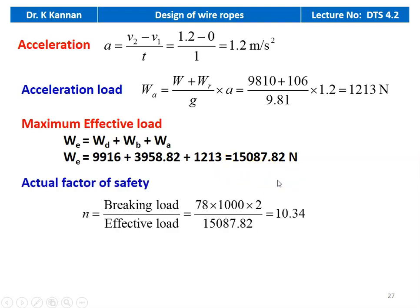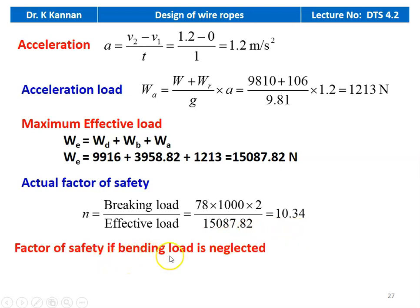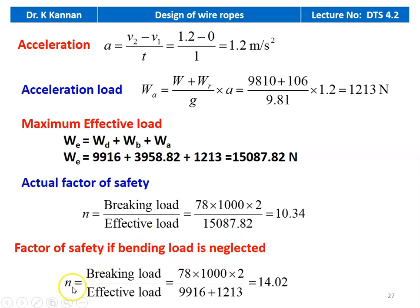The actual factor of safety N equal to breaking load divided by effective load: 78 into 1000 into 2 (two ropes are used) divided by 15,087.82, which equals 10.34. The factor of safety if the bending load is neglected: taking only direct load and acceleration load, 9916 plus 1213, with the numerator 78 into 1000 into 2, gives 14.02. So for the total load the factor of safety is 10.34, and if the bending load is neglected it is 14.02.